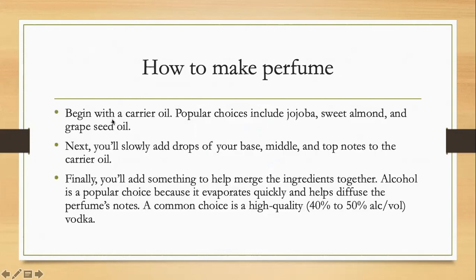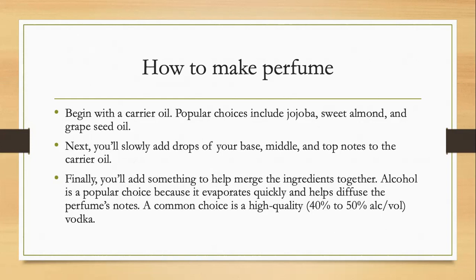How to make perfume? You can first begin with a carrier oil. These are the popular choices like jojoba, sweet almond, or grape seed oil. And then you slowly add drops of your base, middle, and top note to the carrier oil to create your three notes layer, with the preferred ingredients you like. Finally, you add something to merge the ingredients together.